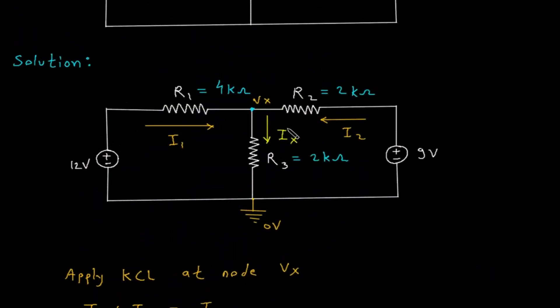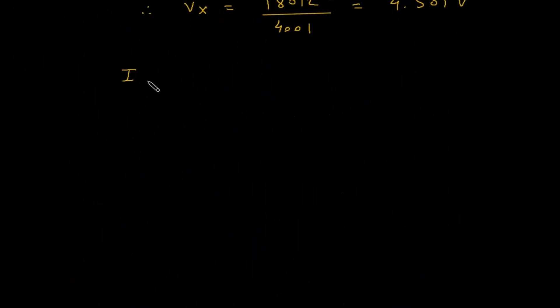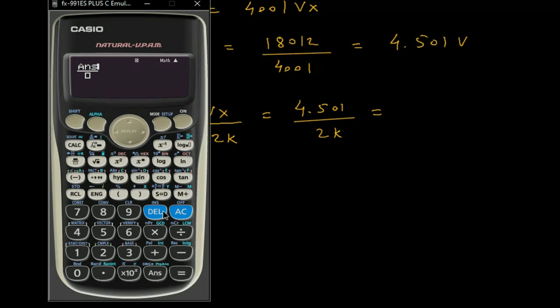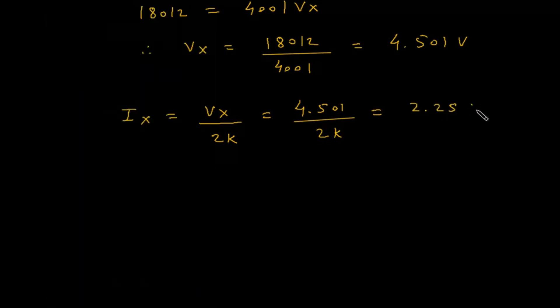Now we have to find Ix. Ix is equal to Vx / 2k. So Vx is 4.501 / 2000, which equals 2.25 × 10^-3. Therefore Ix is equal to 2.25 × 10^-3, or directly milliampere.